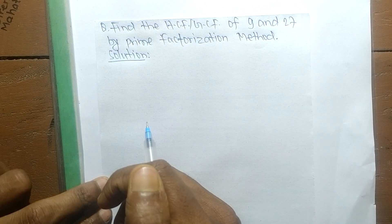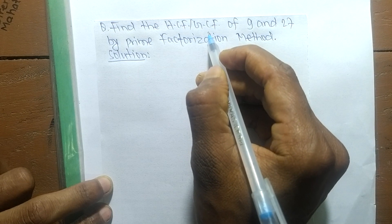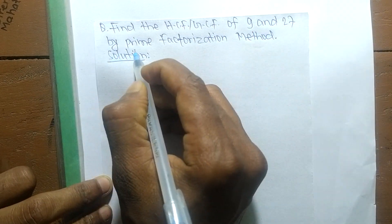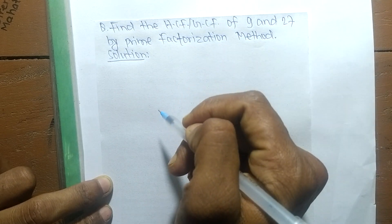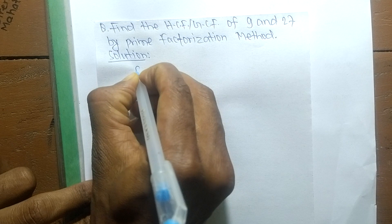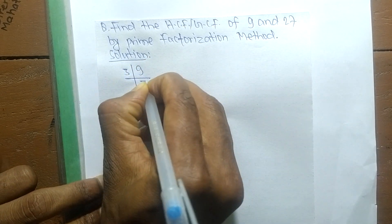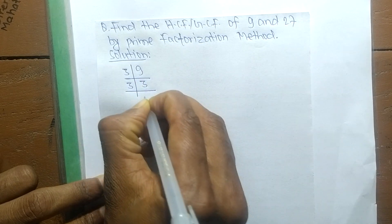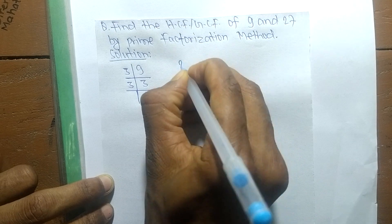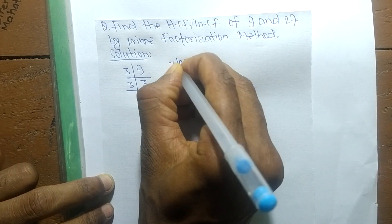Today we shall learn to find the HCF or GCF of 9 and 27 by the prime factorization method. First, we find the prime factors of 9: 9 is 3 times 3, and then 3 times 1 equals 3.